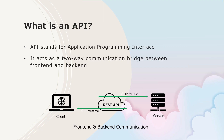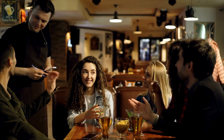Simply put, the front end can talk to the back end and the back end can talk to the front end. If you look at this diagram, the client is requesting some data from the server using the REST API. That request is an HTTP request, and when the server has the data requested by the client, it gives an HTTP response back to the client through the REST API.